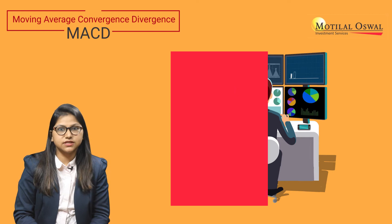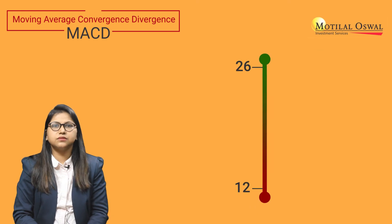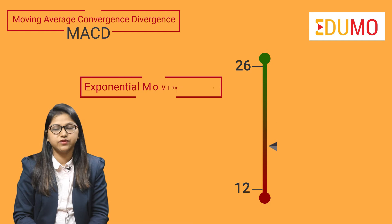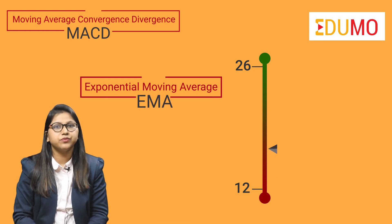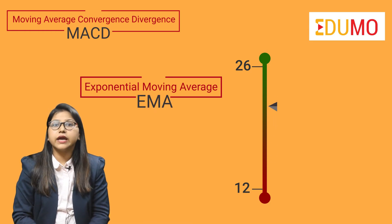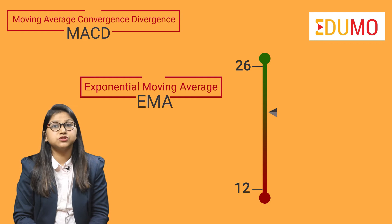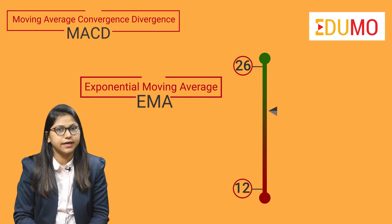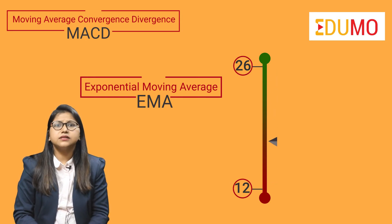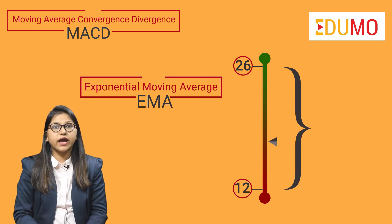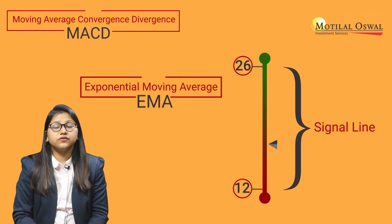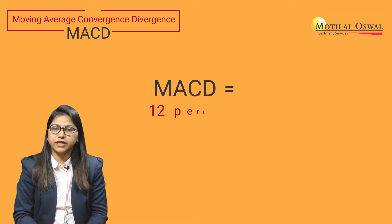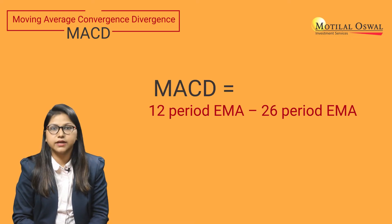The default setting of this indicator is between 12 and 26 periods Exponential Moving Average or the EMA. The MACD is calculated by subtracting the 26 period EMA from the 12 period EMA. The 9 period EMA is referred to as the signal line. The formula for calculating MACD is: 12 period EMA minus 26 period EMA.